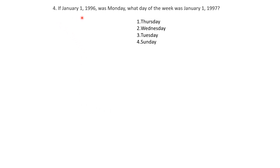Question four: if January 1, 1996 was Monday, what day of the week was January 1, 1997? To calculate this, you first need to know whether the year is a leap year. If a year is divisible by 4, it's a leap year. 1996 is divisible by 4, so it is a leap year. 1997 is not divisible by 4, so it is not.